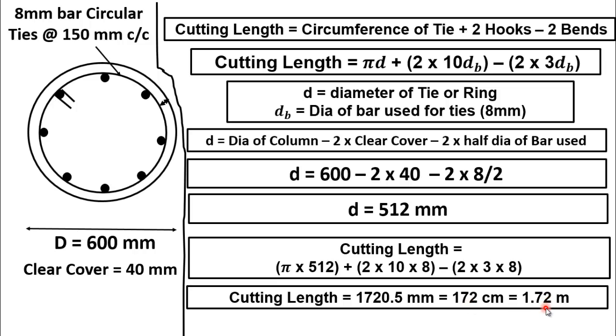So by using this simple method, we have calculated the cutting length of circular tie which is 1.72 meter. It was all for today. Thank you very much for watching the video full.